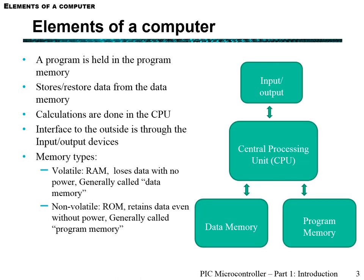There are generally two types of memory in a computer. You have volatile memory, known as RAM or random access memory, which loses its data without power. Then you have non-volatile memory, usually called program memory, which retains data even without power. In a home computer, that would be your hard disk or solid state drive, which are non-volatile, and your RAM, which is volatile.